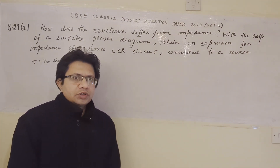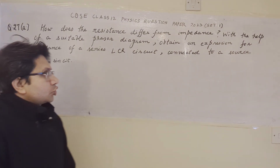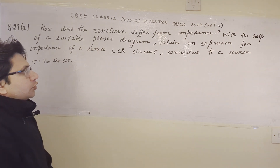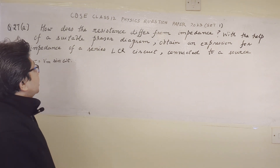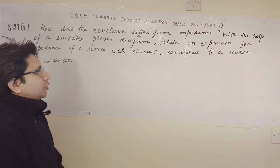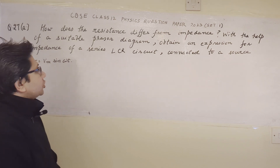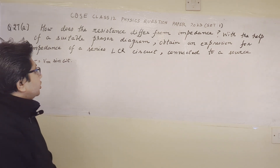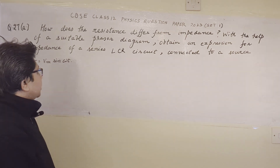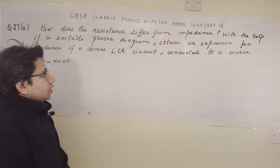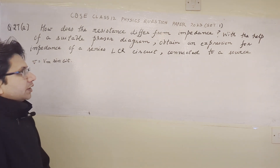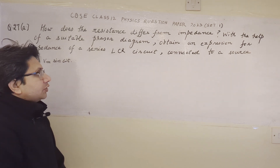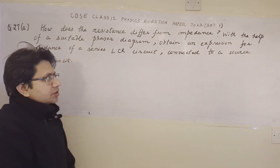Hello students, how are you? Hope you are doing well. The question is: how does resistance differ from impedance? With the help of a suitable phasor diagram, obtain an expression for the impedance of a series LCR circuit connected to a source V equals to Vm sin(ωt). This problem is based on the topic of alternating current. First, we have to answer the difference between resistance and impedance.